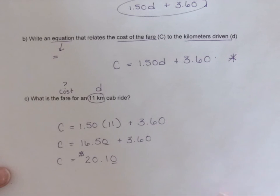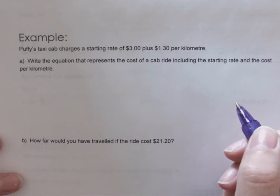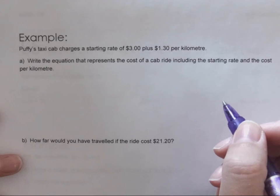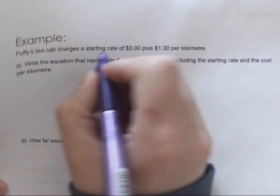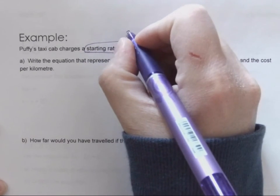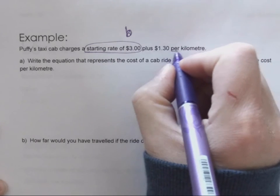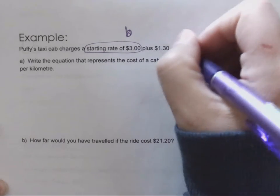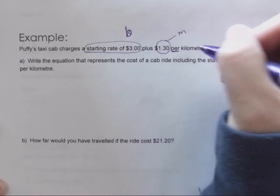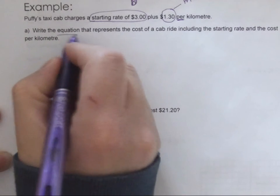All right, okay, so another cab company. Puffy's taxi cab charges a starting rate, so that's that fixed rate, so that's three dollars, so that's my b value. Let me write that in there, that's my b value. And again the word 'per' is going to tell me that that's my rate, so my dollar thirty is my m value. That per kilometer.